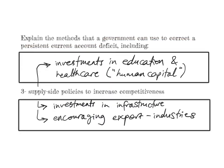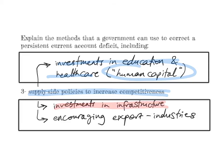The last set of policies are supply side policies designed to increase the country's competitiveness. This can be done by investments in education and healthcare, investing in the human capital of your workforce, which over time would make them more productive and hopefully lead to better goods and services that can be exported and less need for imports. It also includes investments in infrastructure to make industries more competitive and attract FDI. The government could also give subsidies or tax breaks to encourage export industries.